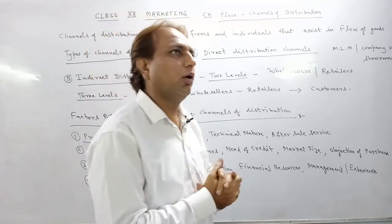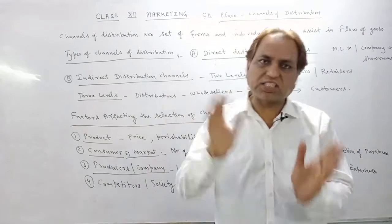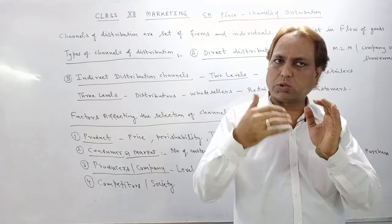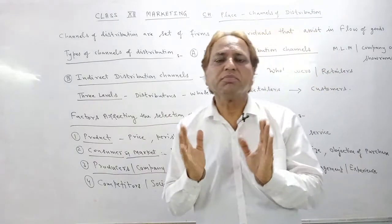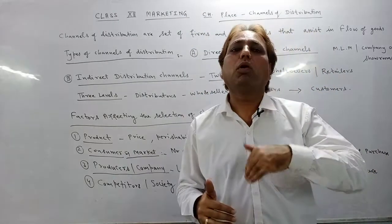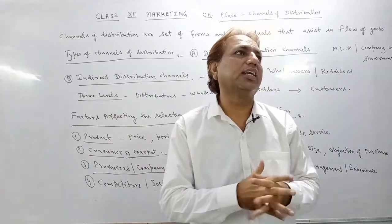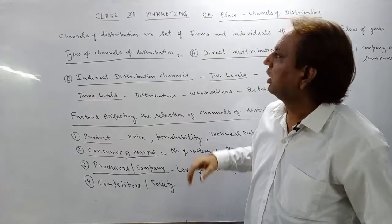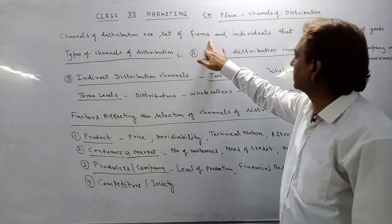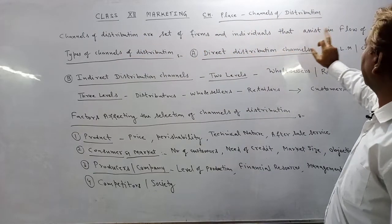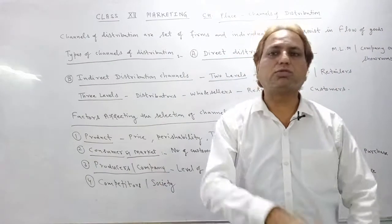Channels of distribution are individuals and firms that assist in the total journey. The product is made in the factory, assembled there, and after that reaches the ultimate consumer. Those are the channels of distribution. So the topic today is channels of distribution — the set of firms and individuals that assist in the flow of goods from factory to the consumer.